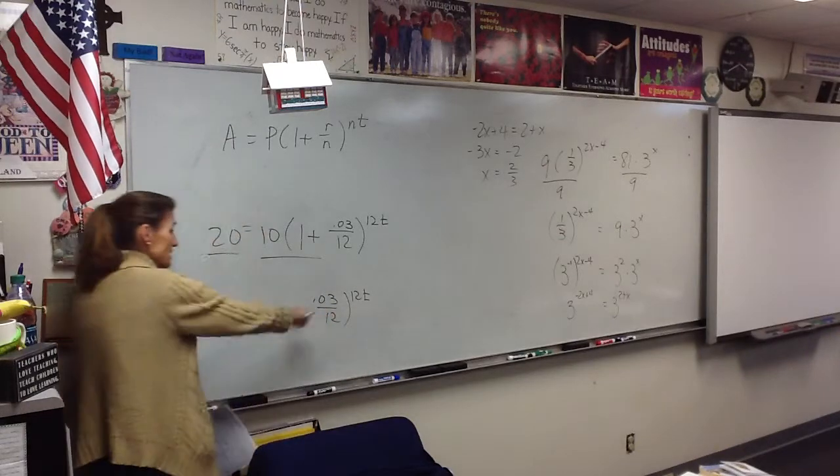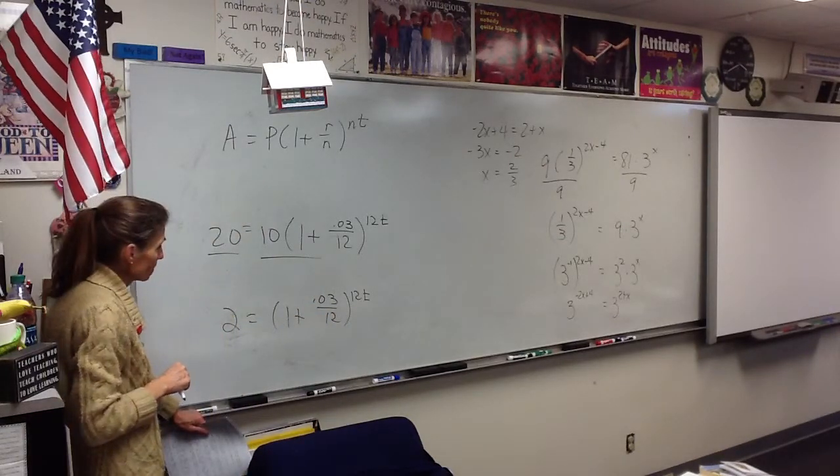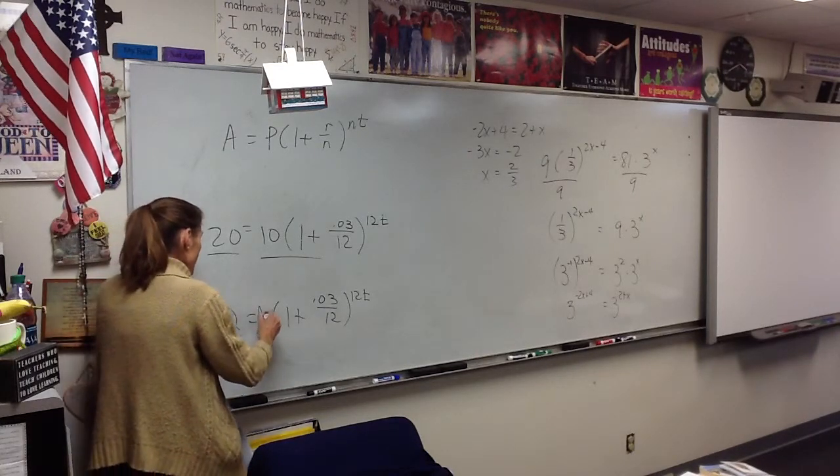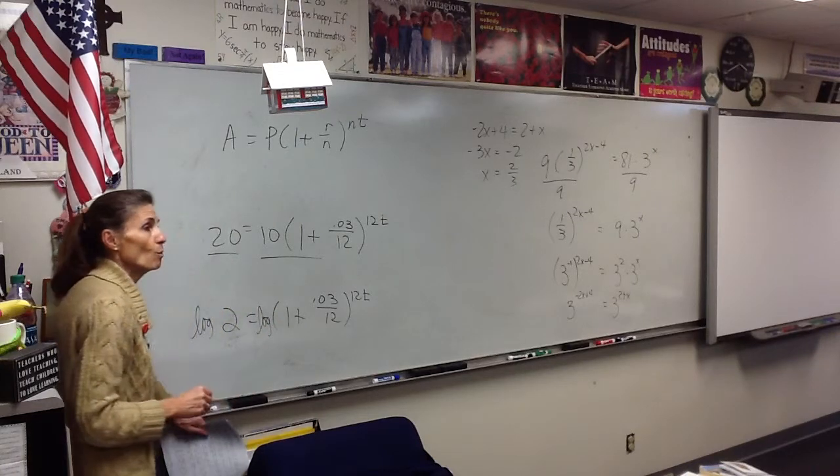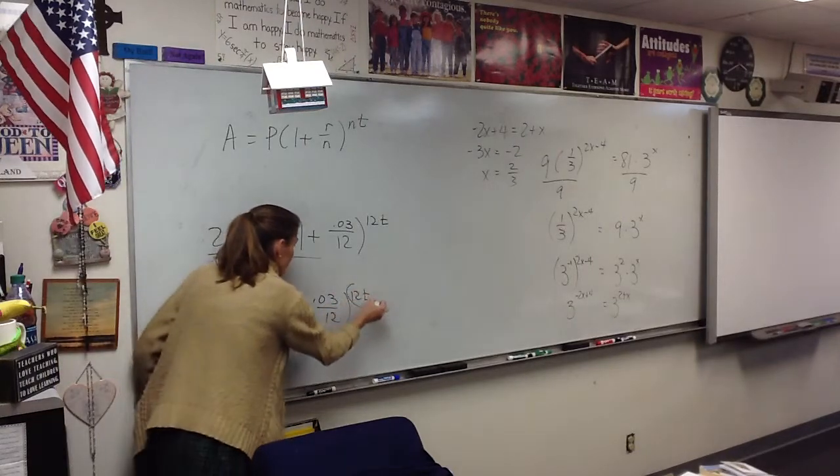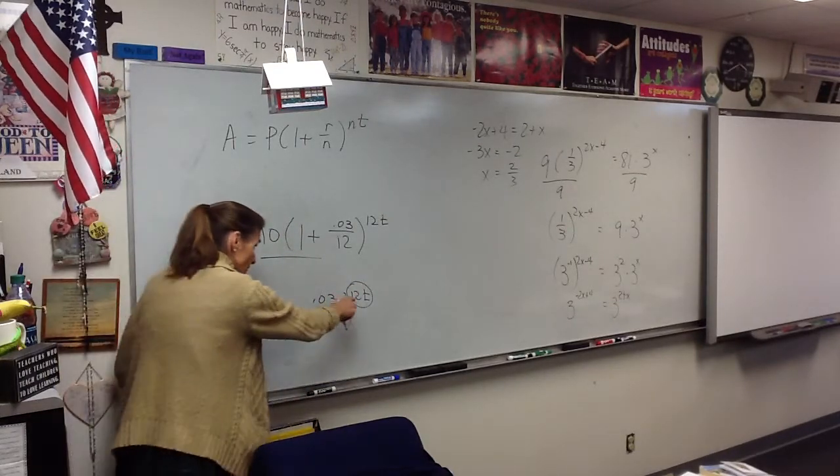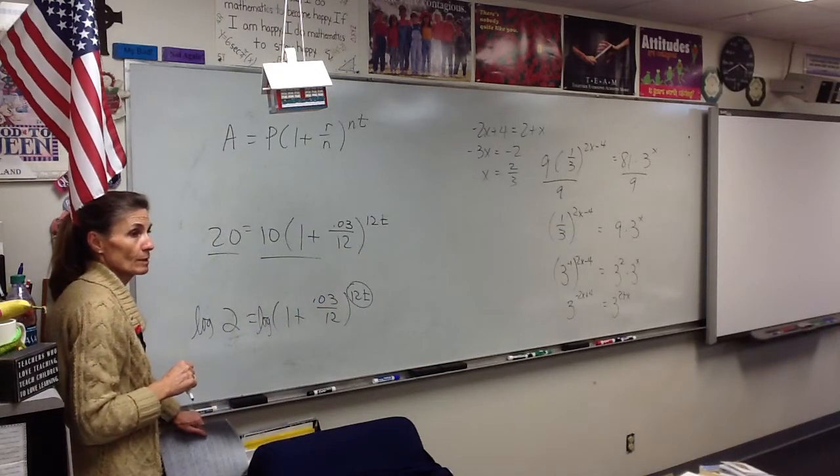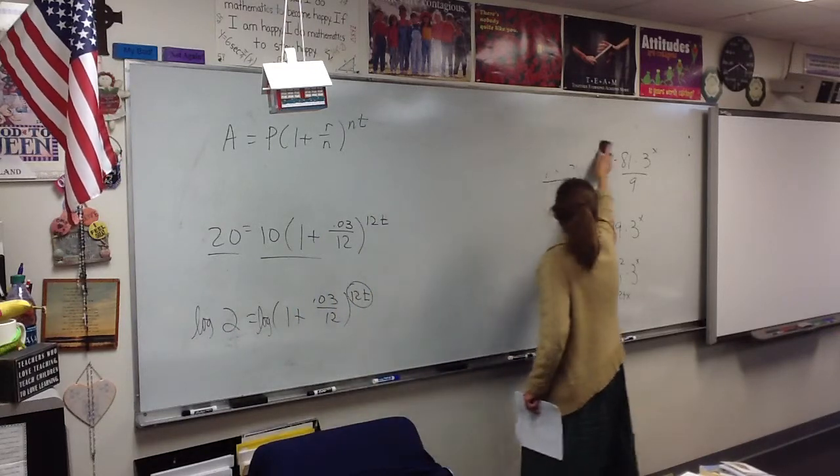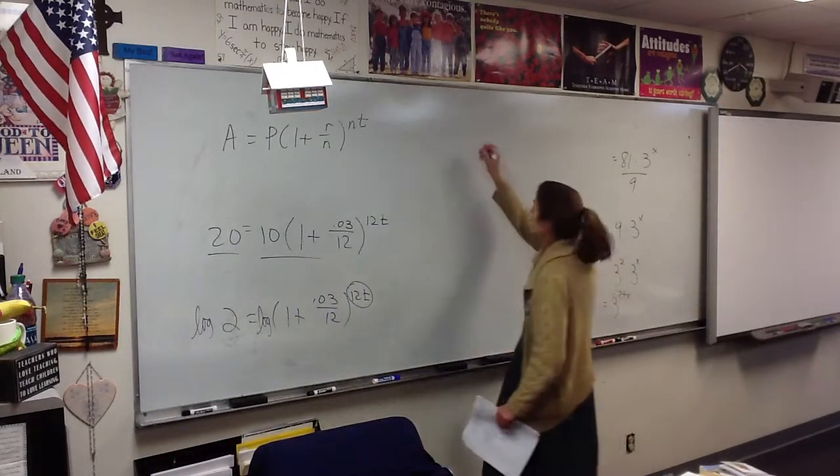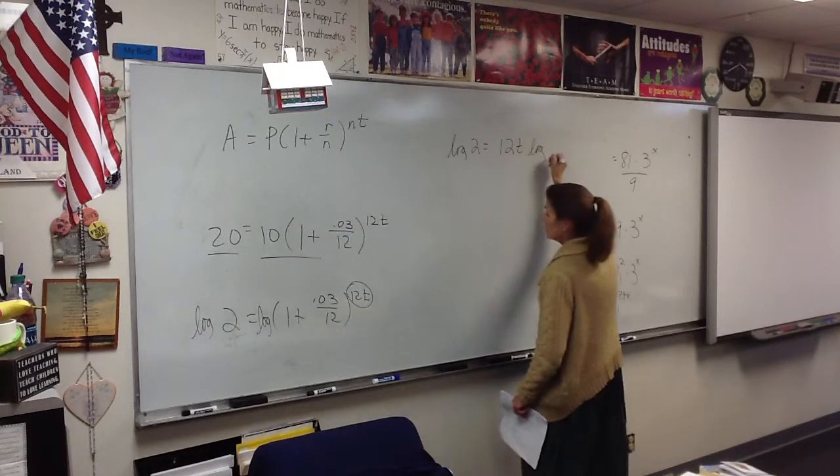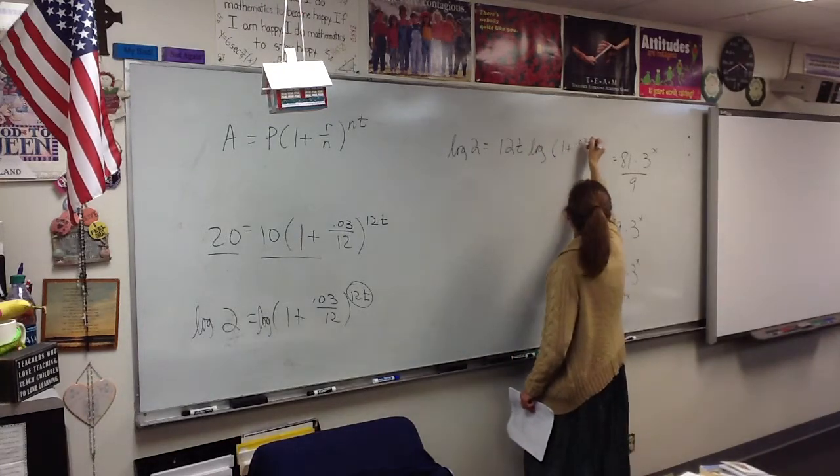All right. Now, I'm going to solve this equation. I'm going to take the logarithm of both sides. Because why? What does taking the logarithm of both sides allow me to do? With that exponent right there. It becomes a coefficient. So, now I can figure out what it is. So, the log of 2 equals 12T log of 1 plus 0.03 divided by 12.